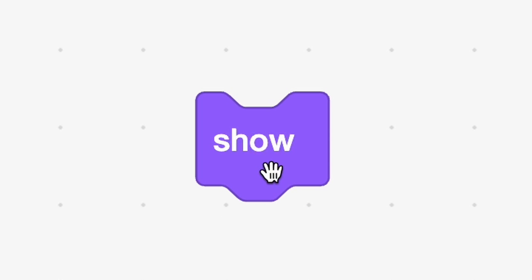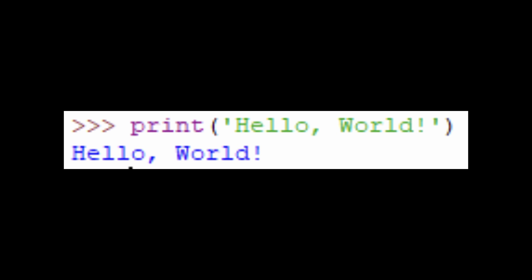When any block is run, it will carry out a specific action such as making the cat show. This is just like a function in coding. When you run a function, you are going to get the output from that function.